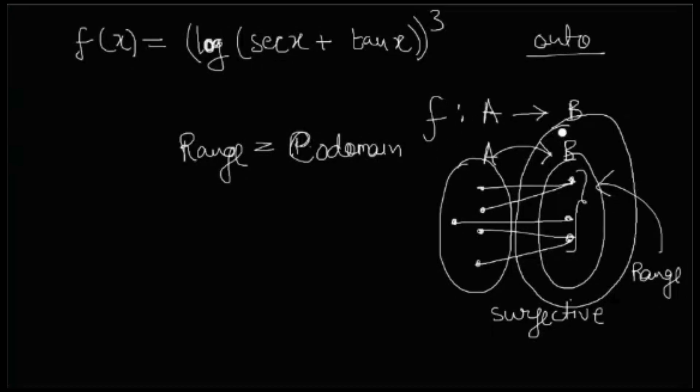Because this is the range, this is the codomain, and the codomain has got intersected with the range. That means the codomain is nothing but the range. It has to be surjective.